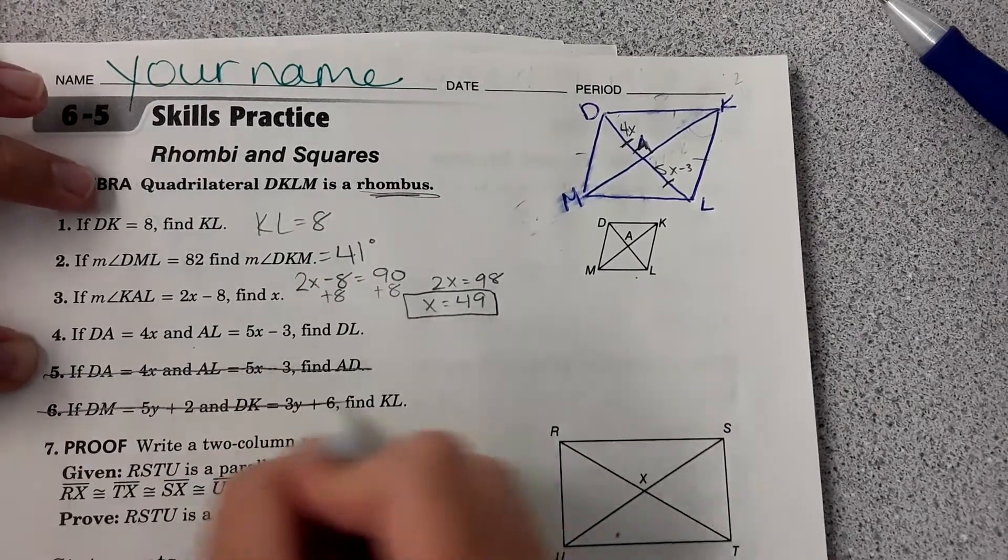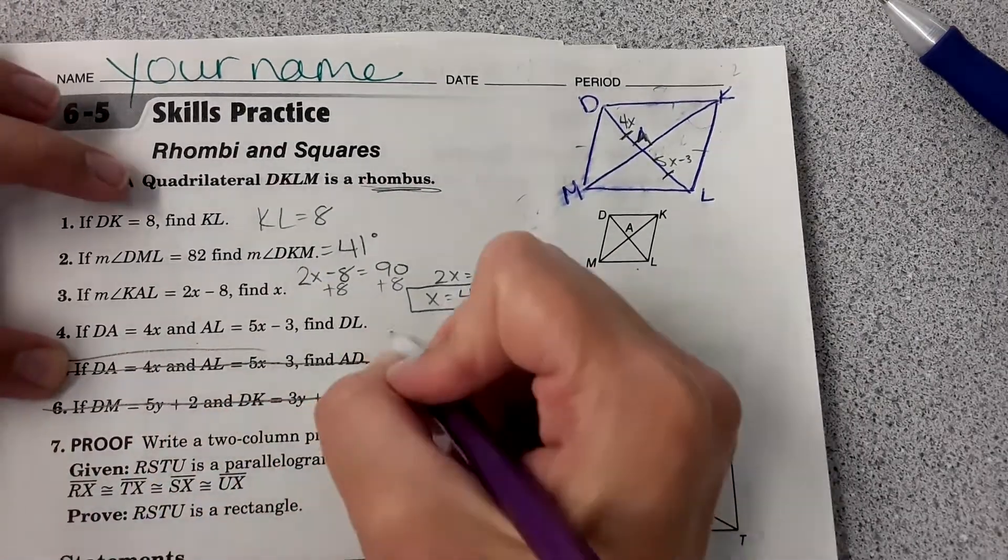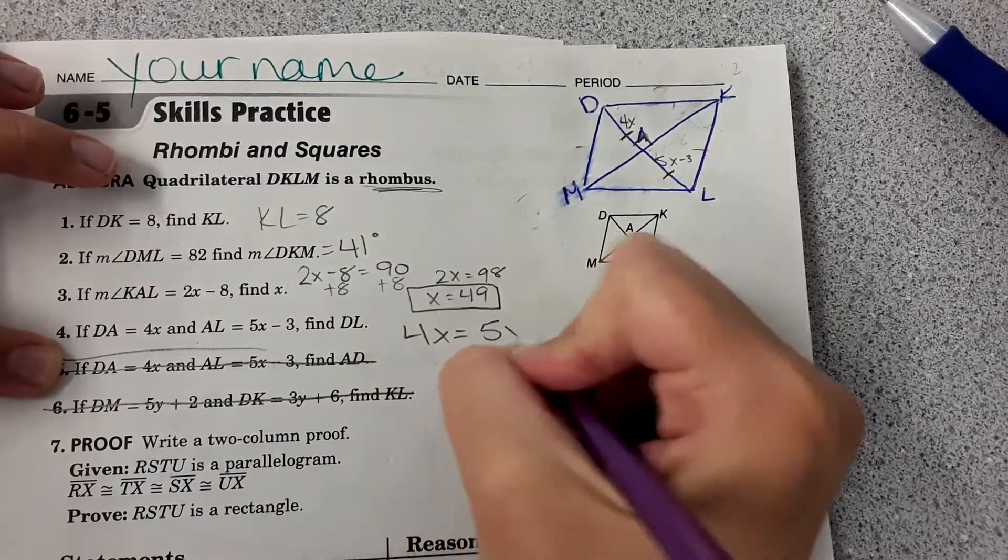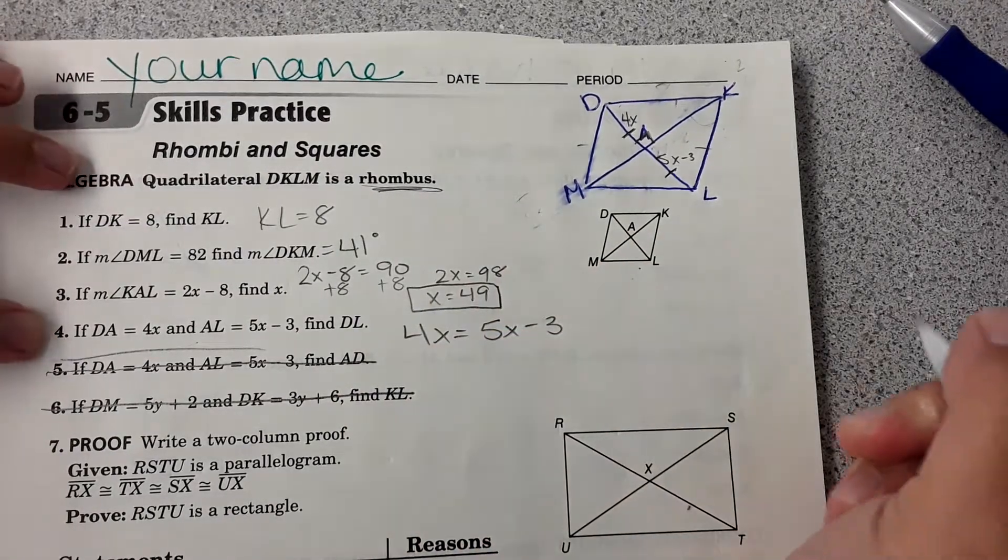And I think we're going to cross these out because this is going to take room to work it out. So 4x equals 5x minus 3, and we'll solve for x.